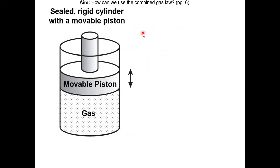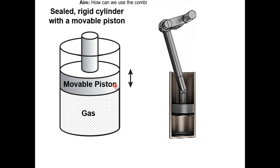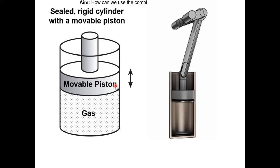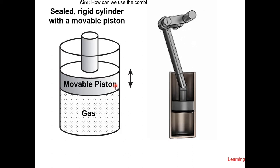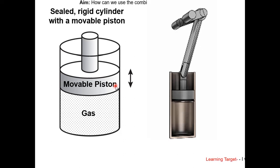Questions about the gas law may mention a sealed rigid cylinder with removable pistons. The gas is inside the cylinder and the piston can move up and down based on changes in volume, pressure, and temperature of the gas.